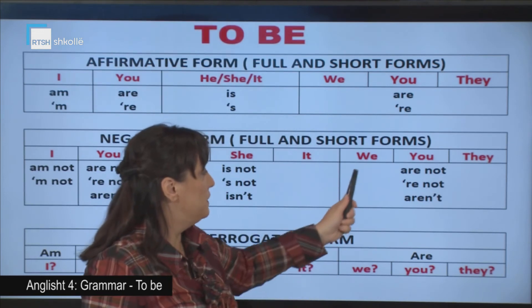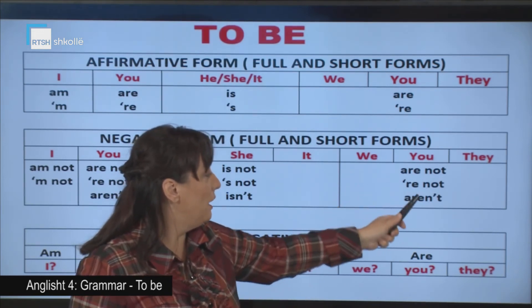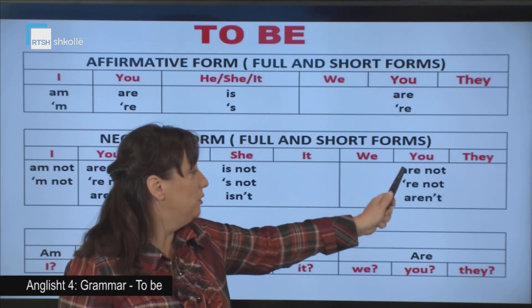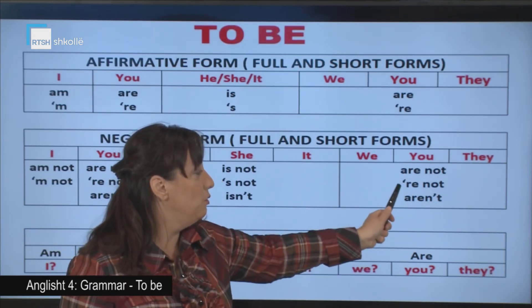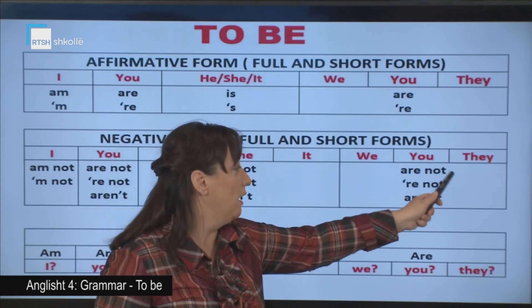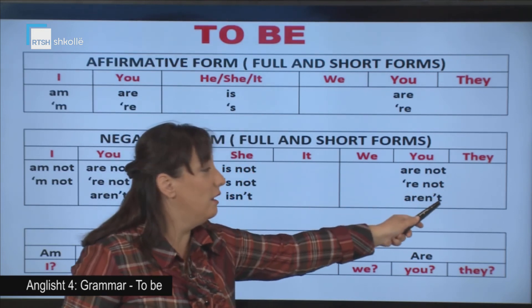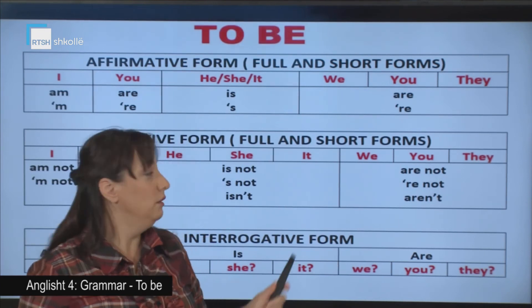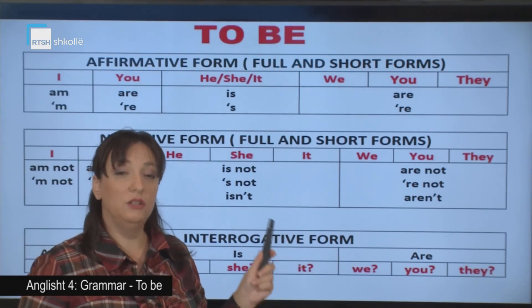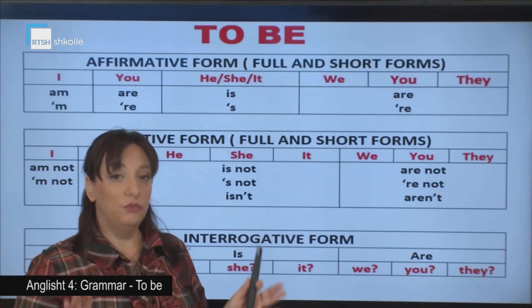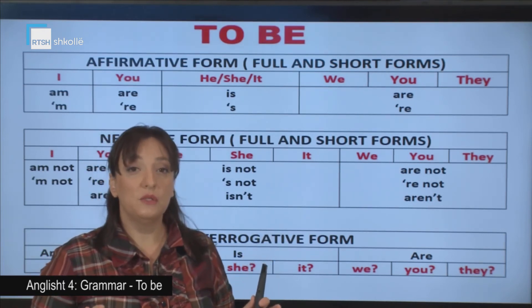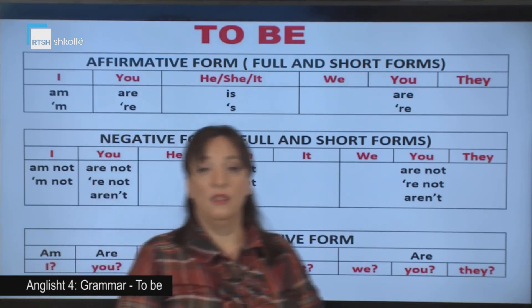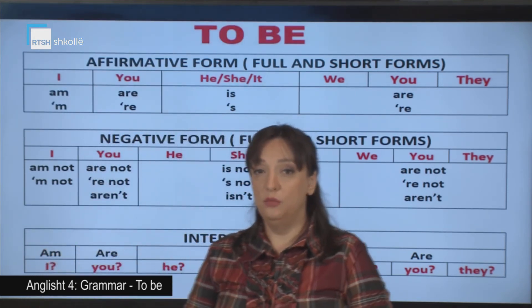'We are not', 'we aren't', 'we're not'. 'You are not', 'you aren't', 'you're not'. 'They are not', 'they aren't', 'they're not'. These are the negative forms. We use 'not' to form the negative. So we use the particle 'not' to form the negative.